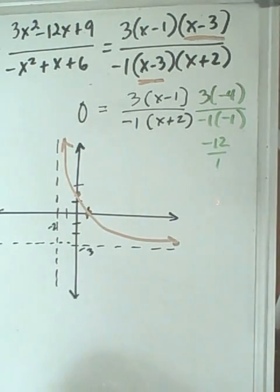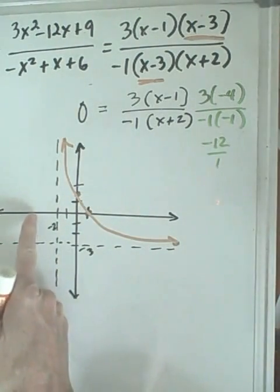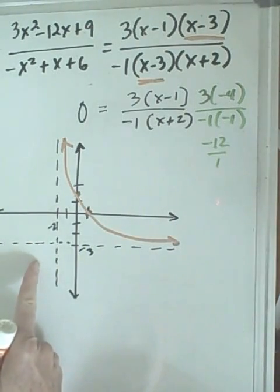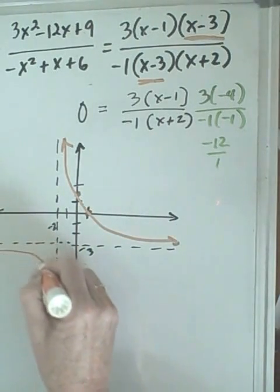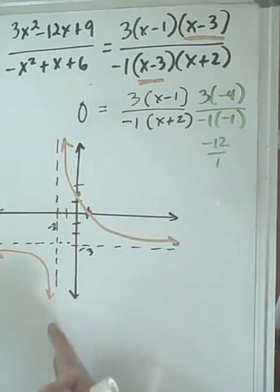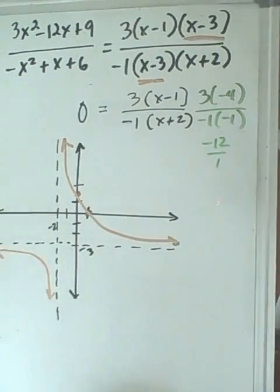indicating that the other part of the graph is down here, at negative 3, it would be at negative 12. So, it would be below the horizontal asymptote. And, of course, as it hits the vertical asymptote, it will not cross and continue down the way.